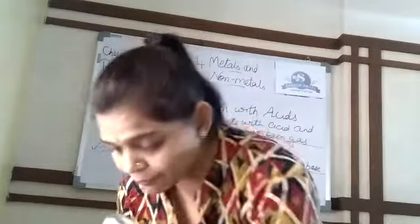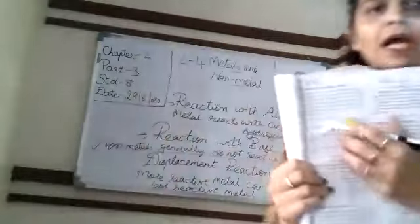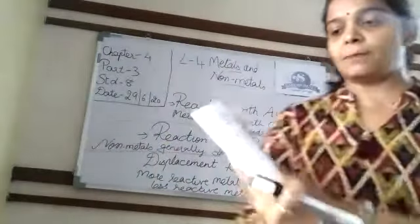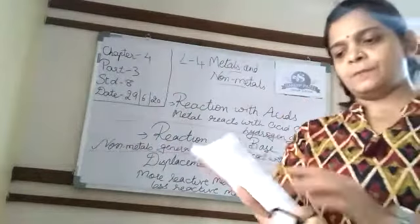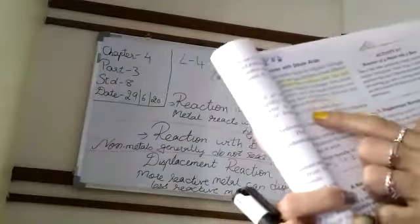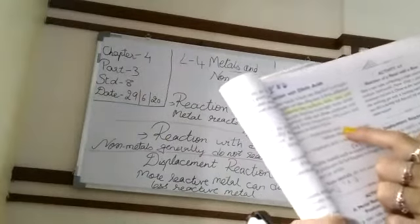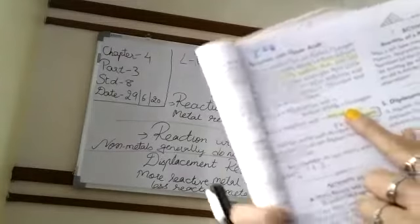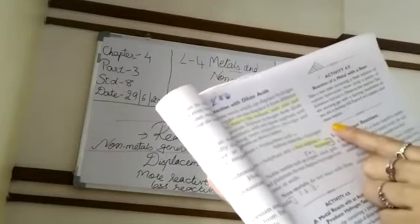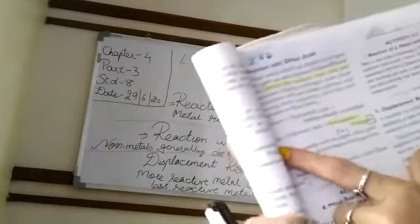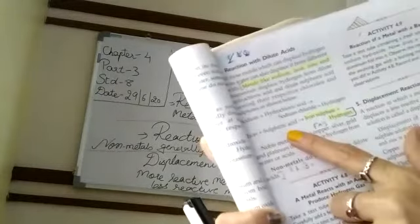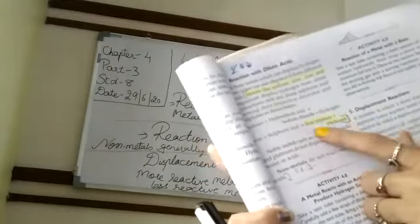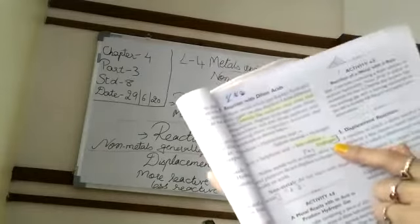I have one reference book here. They have given very good examples. Sodium plus hydrochloric acid gives sodium chloride plus hydrogen gas. Again, another metal: iron plus sulfuric acid gives iron sulfate plus hydrogen gas.